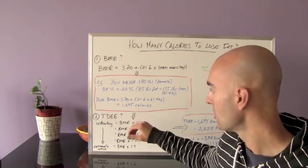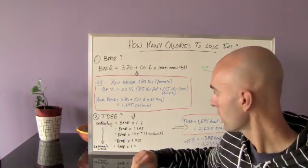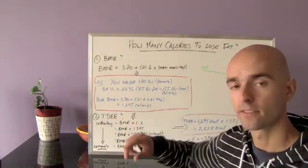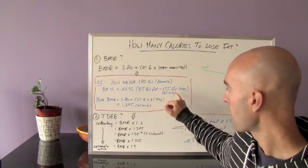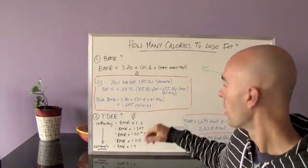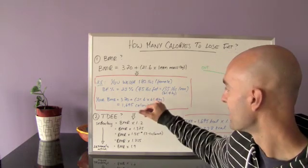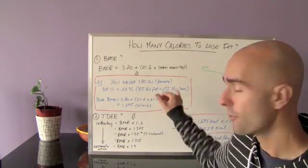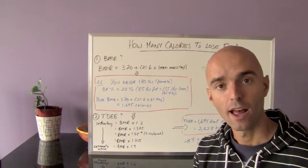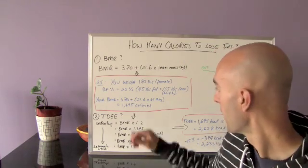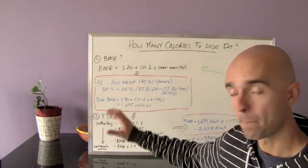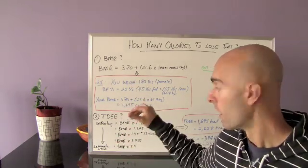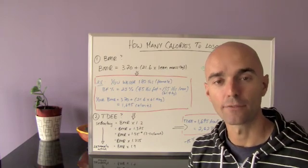So based on that, now we can plug that number back into our equation. So we look at your BMR in this case would be 370 plus in brackets, 21.6 times your lean mass, which we just calculated here, which in kilograms is 61.4. So we take 135, we divide it by 2.2 to convert it back to kilograms. And then we just basically multiply that out. So what we get is a total basal metabolic rate of 1,695 calories.